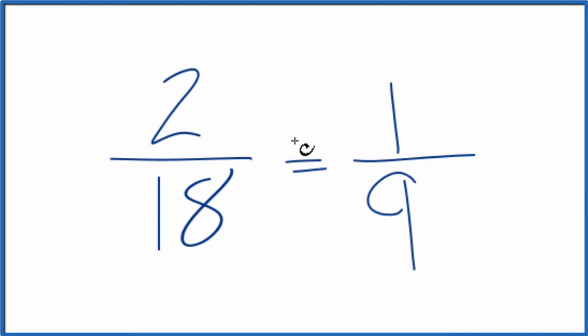When we simplify the fraction 2/18, we get 1/9. We can't simplify this any further, and these are equivalent fractions. 2/18 and 1/9 give you the same value; we've just simplified 2/18 down to 1/9.